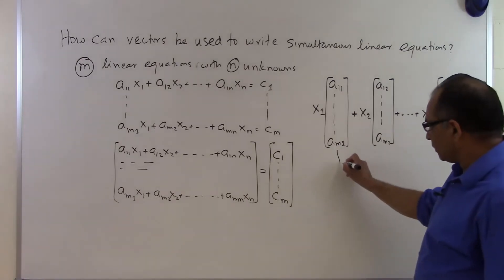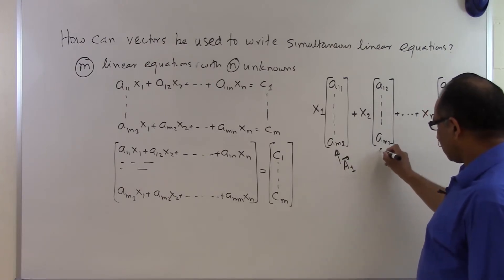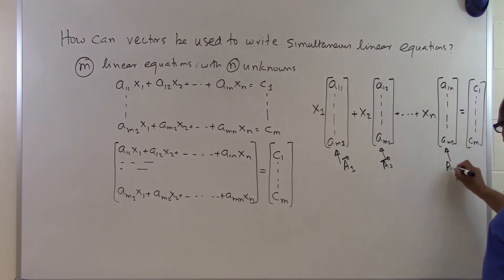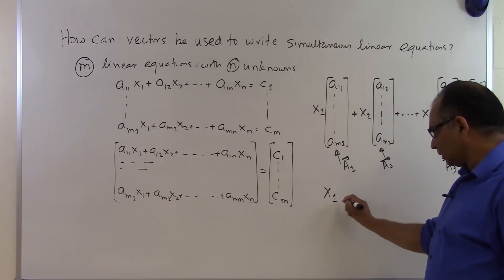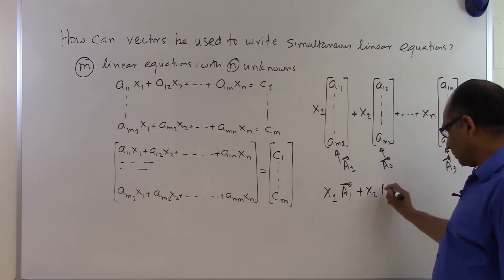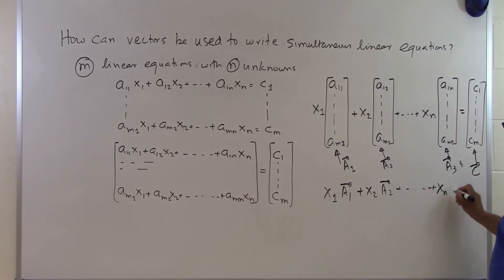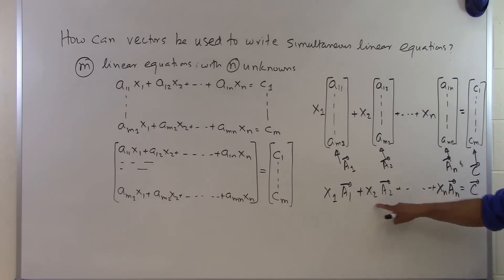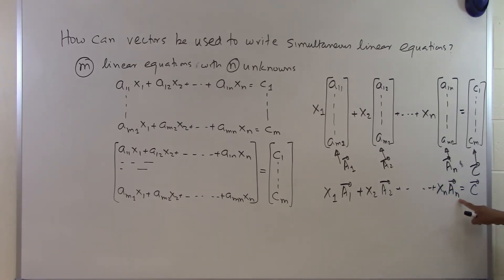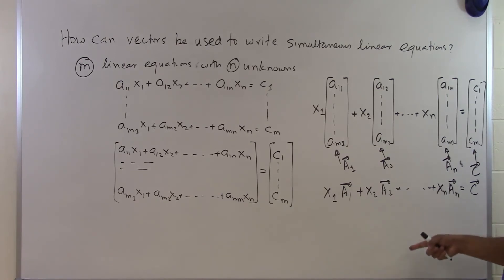If I call the first column vector a1, the second a2, and so on, with the last one being an, and the right-hand side the c vector, then what I'm finding is: x1 times a1 plus x2 times a2 plus ... plus xn times an equals the c vector. So I'm getting a linear combination of n vectors — multiplied by scalars x1, x2, up to xn — equal to the c vector.